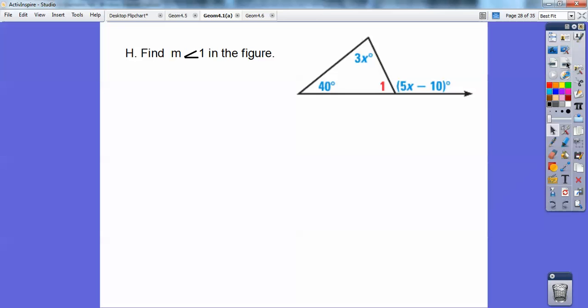How about this one here? It says find the measure of angle 1. So again, I'm going to say this exterior angle equals this one plus this one. And so we're going to get x equals 25. I'm going to plug in 25 right here to get that guy to be 115. So this is 115. And this straight line is 180. They're asking for angle 1 right there. So 115 plus 65 would give me my straight line of 180. So angle 1 is 65.